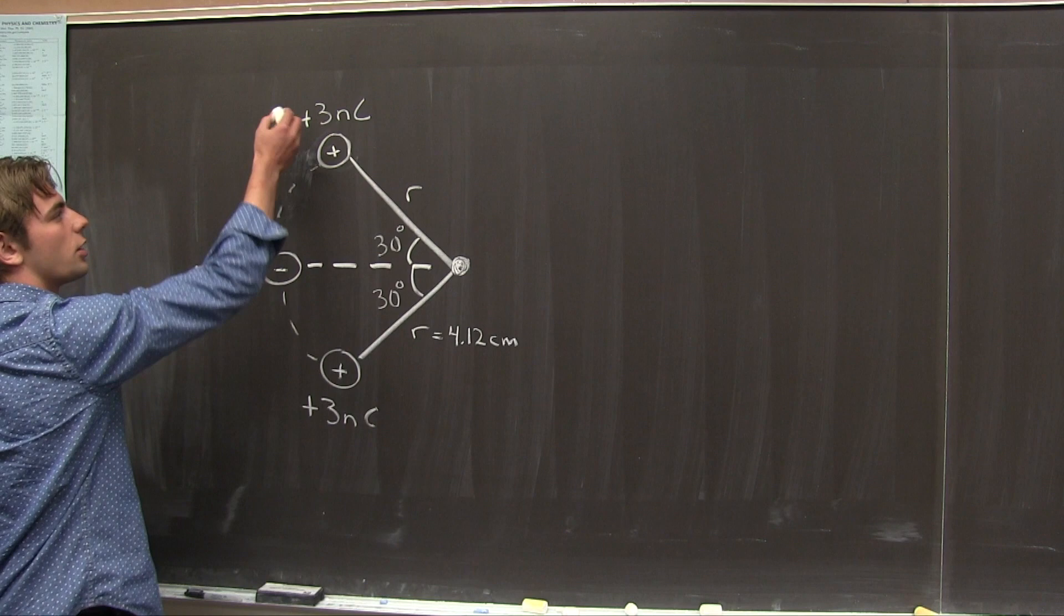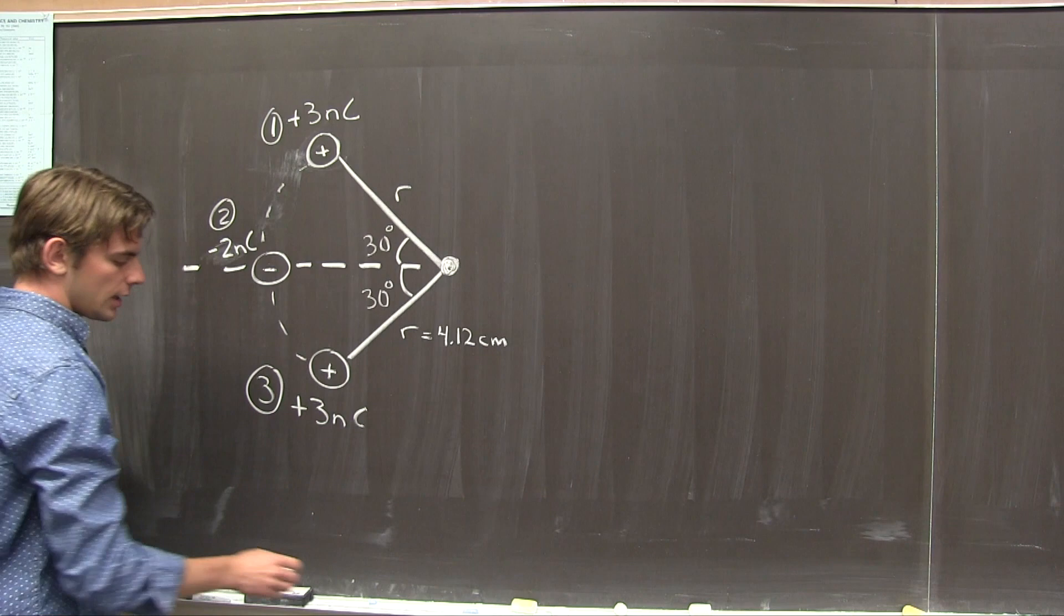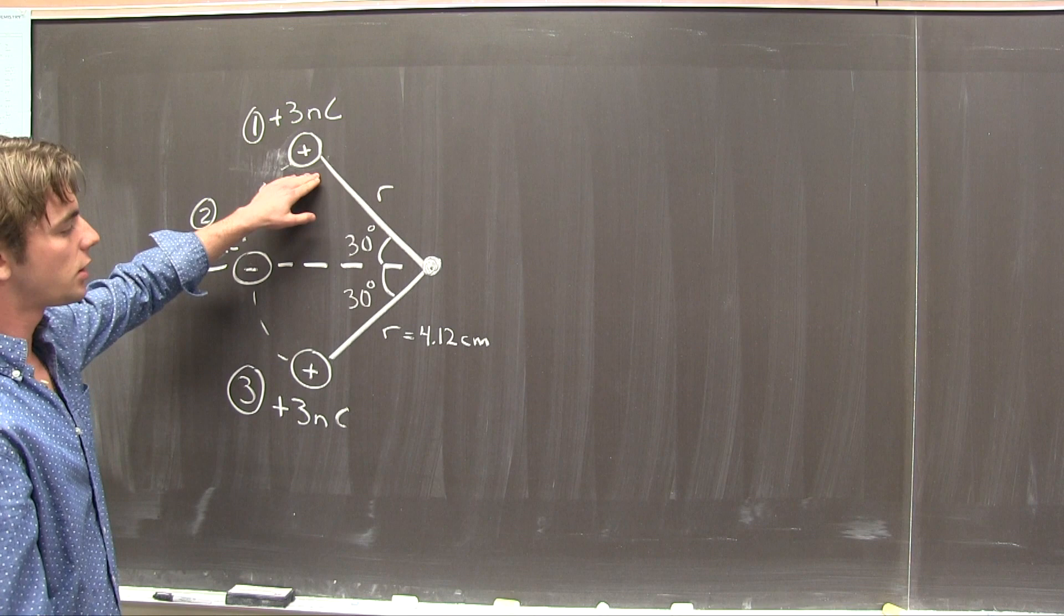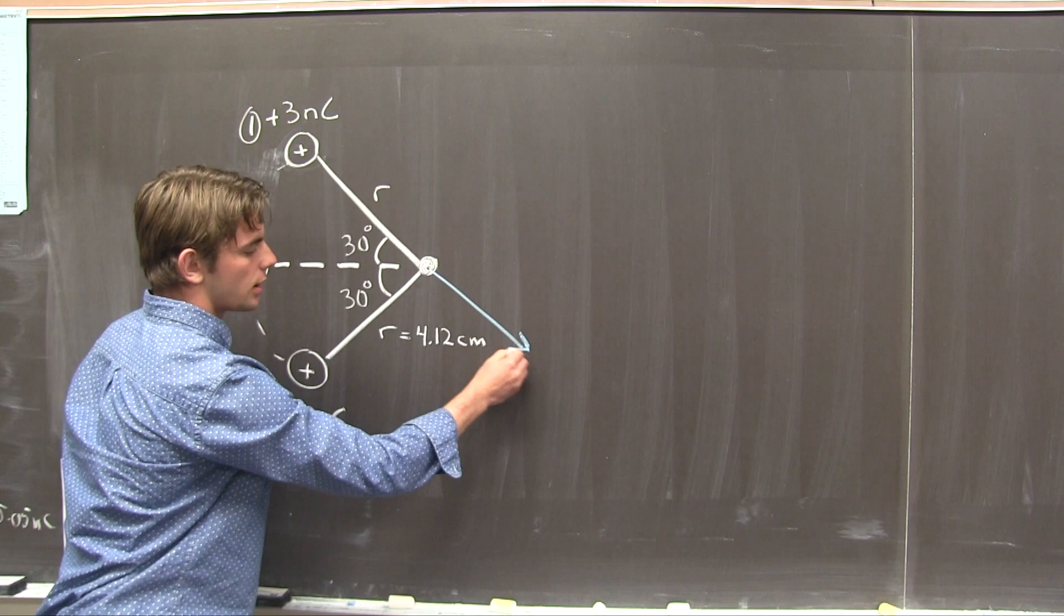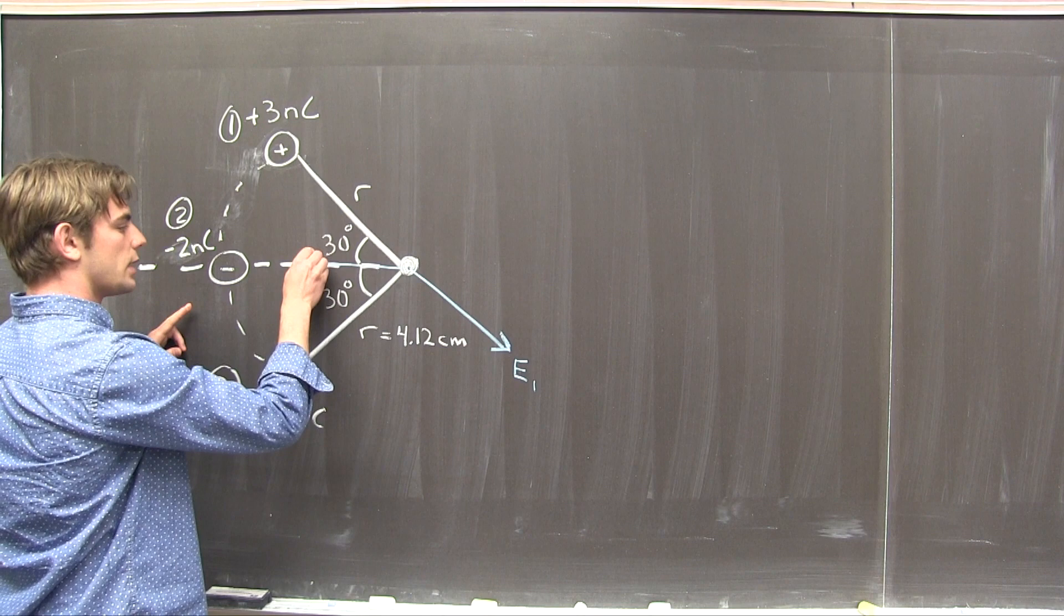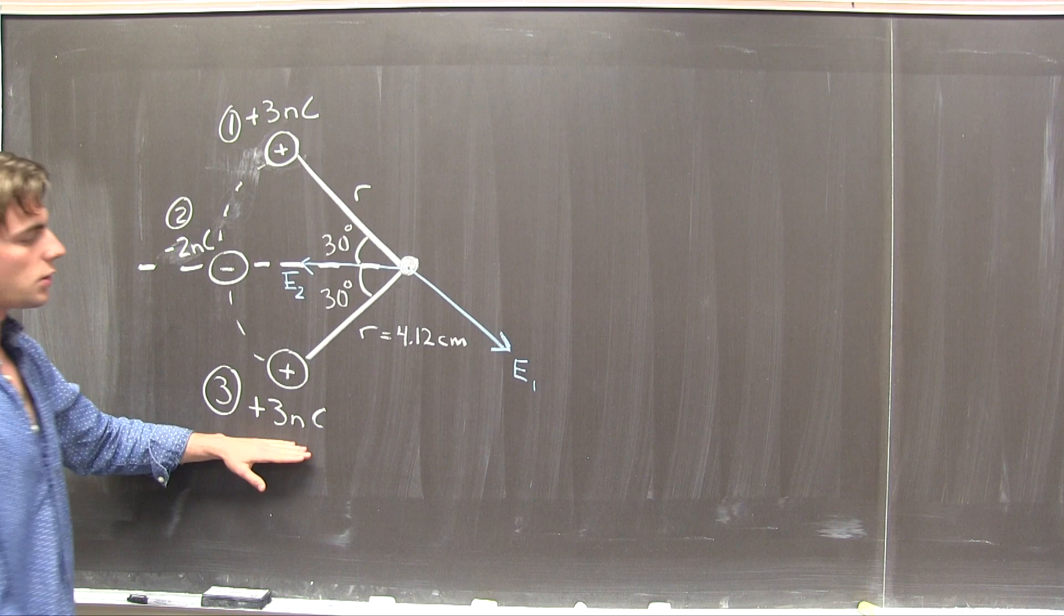And first, we have to get a visual representation of what these electric fields look like. So we'll start with charge 1. We know that positive charges create electric fields pointing away, so I'll label E1 here. And for charge 2, we know it's negative. That implies that the electric field is going to be pointing towards it. Here's E2. And then lastly, charge 3 is also positive, so it's going to look similar to E1. In its electric field, E3.